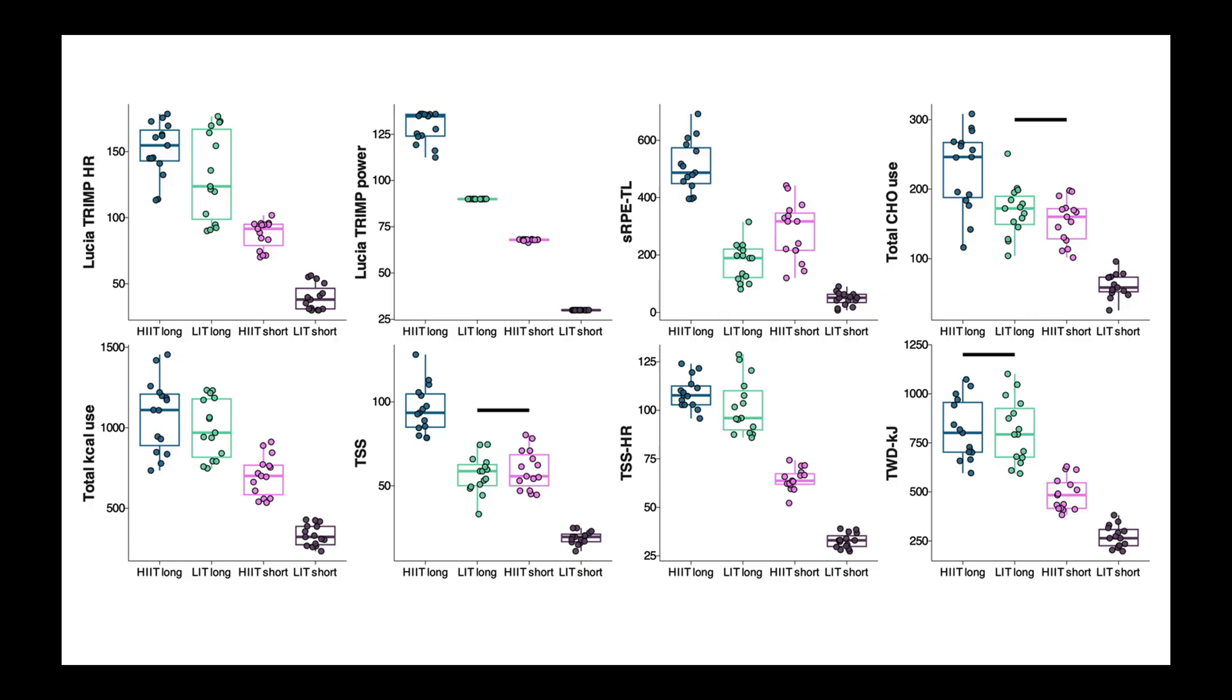So what did we find? This figure shows the six different training load measures, as well as the measured carbohydrate and calorie use, each separated by the four types of sessions. So each color is one of the different sessions. It's a lot to look at, so we'll focus in on just a few.